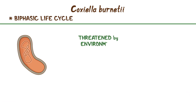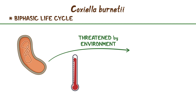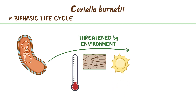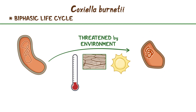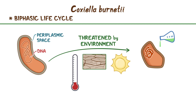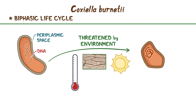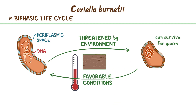When it feels threatened by the environment — like when the temperature becomes too high or too low, in case of extreme dryness, or when there's harmful radiation around — C. burnetii transforms into the SCV by shrinking and condensing its DNA and periplasmic space. In this form, it's able to resist heat, harsh chemicals, digestive enzymes, and even antibiotics. Remarkably, the SCV can survive for years, waiting for favorable conditions, and then convert into the LCV that can grow and divide inside host cells.